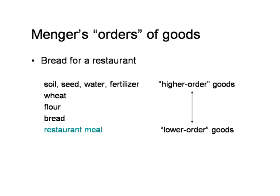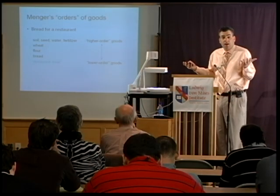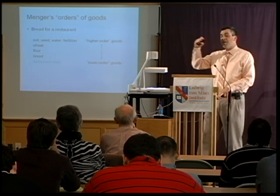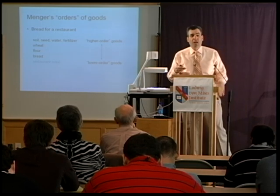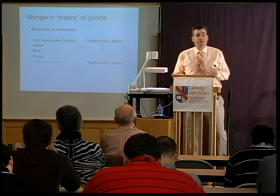Imagine another example where bread is served in a restaurant. The final good consumed in the restaurant is the meal, of which the bread is a component. From the restaurant's point of view, the bread is an intermediate good — a producer good. It's not something the restaurant owner consumes; what the restaurant owner consumes is the income received from the patrons. Exactly the same bread, but where it fits in the production scheme depends on the purposes of the individuals involved.